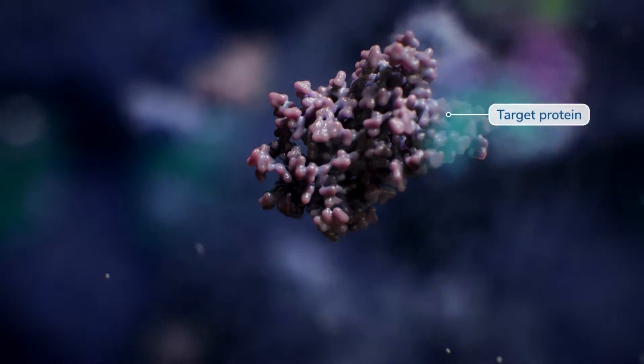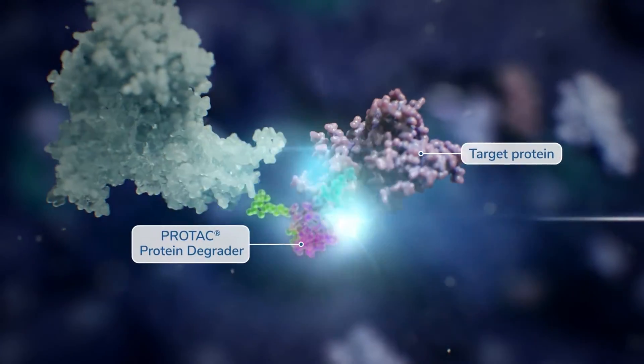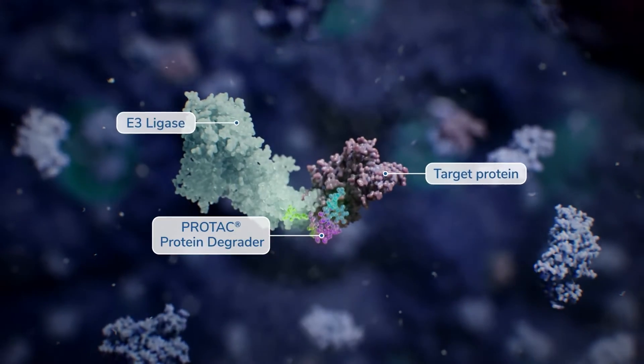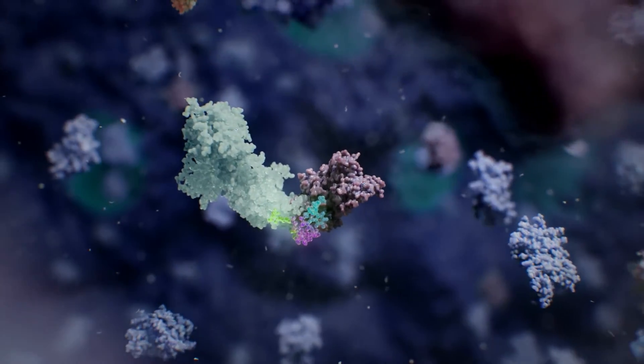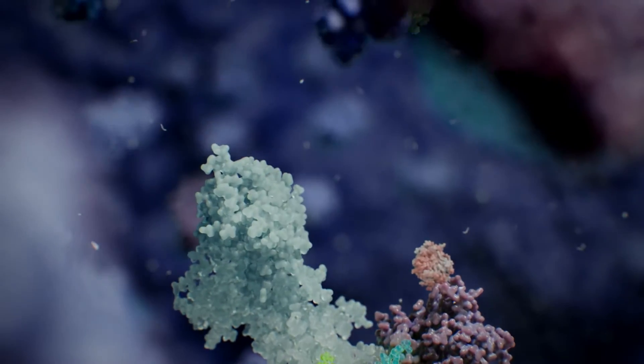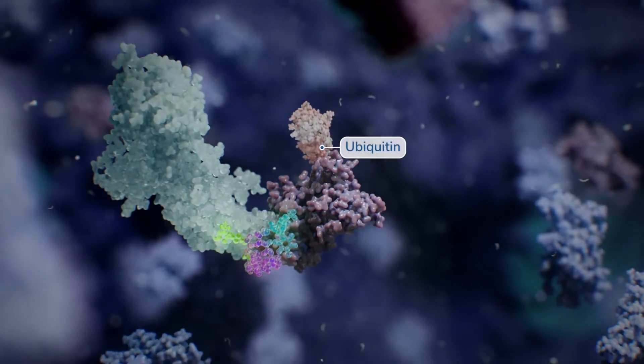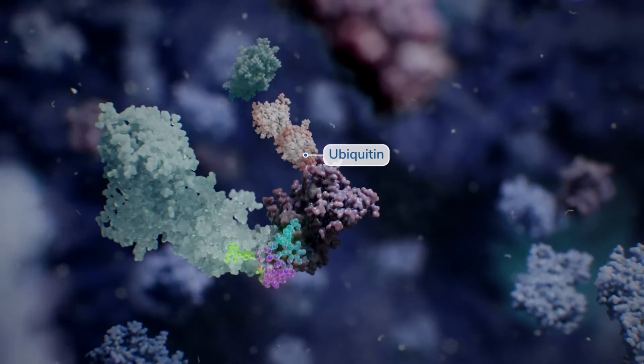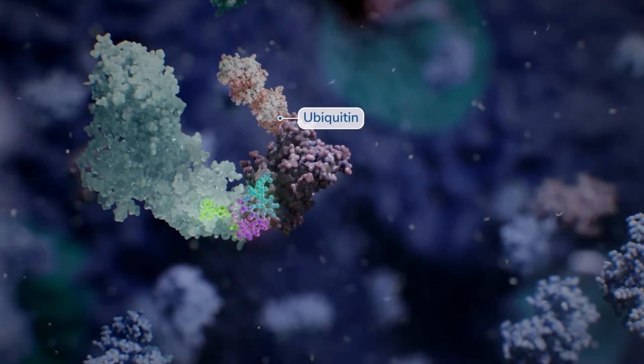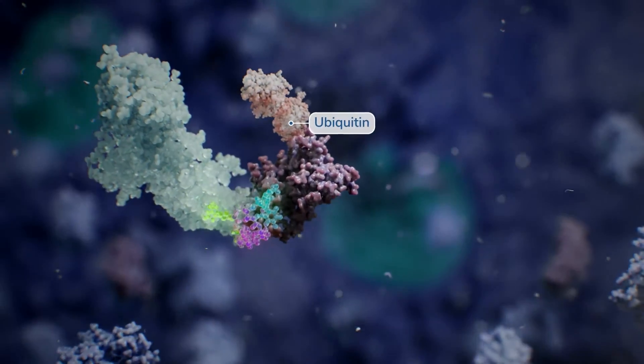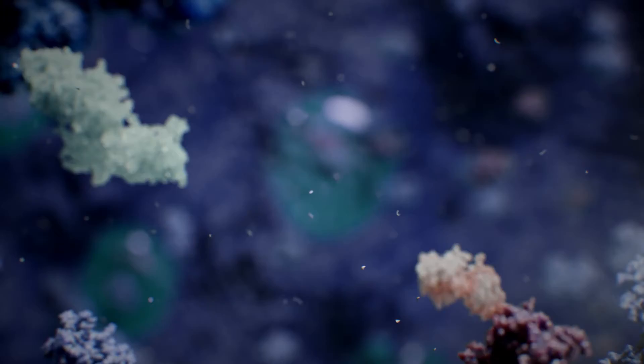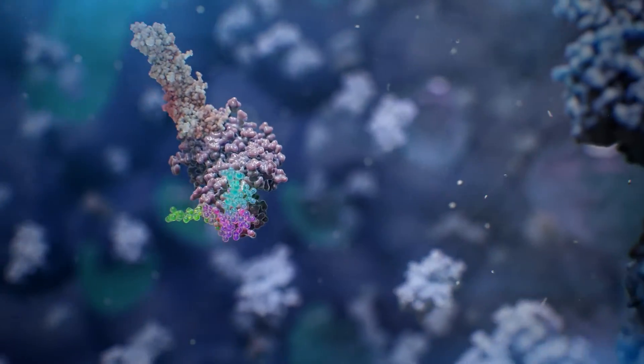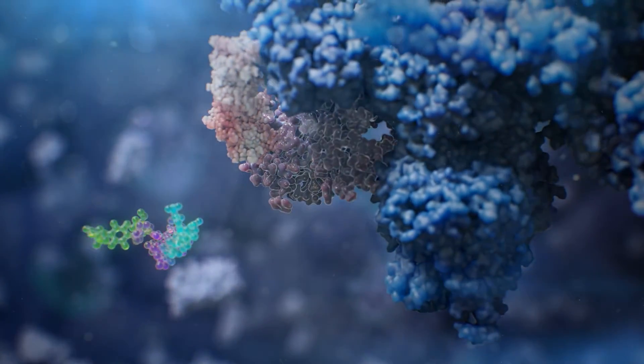One region binds to a disease-causing target protein while the other binds to an E3 ligase, enabling the formation of a complex that tags the disease-causing protein with a ubiquitin chain. Once multiple ubiquitin molecules have been added to the disease-causing target protein, it is directed to the proteasome where it is subsequently degraded.